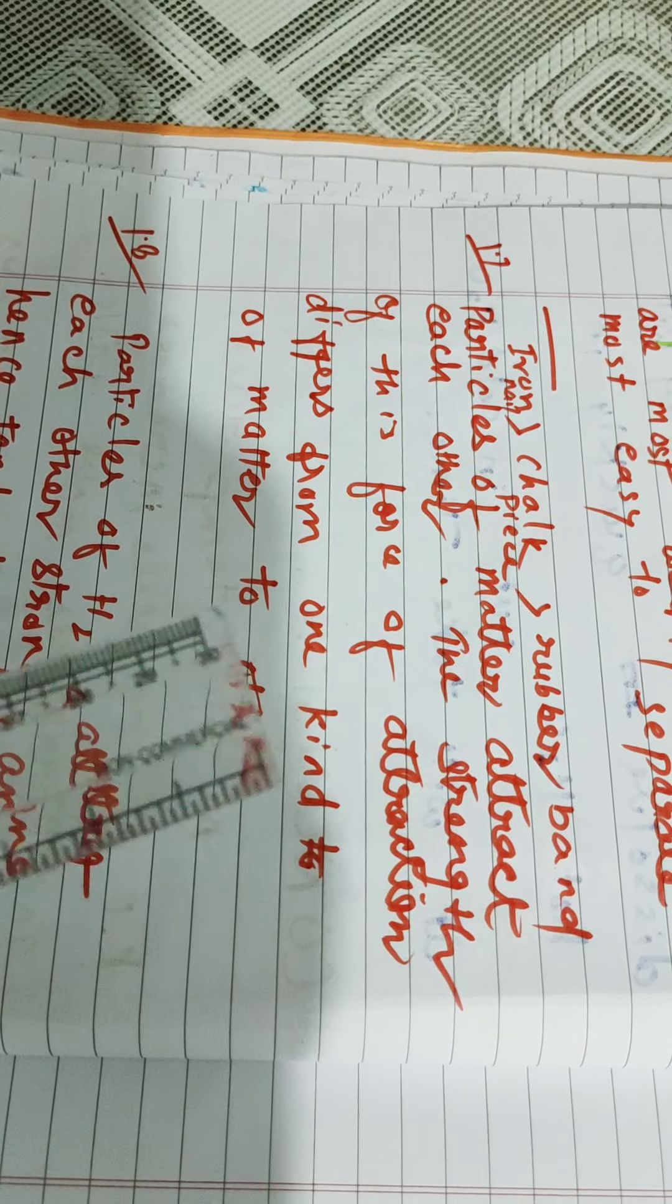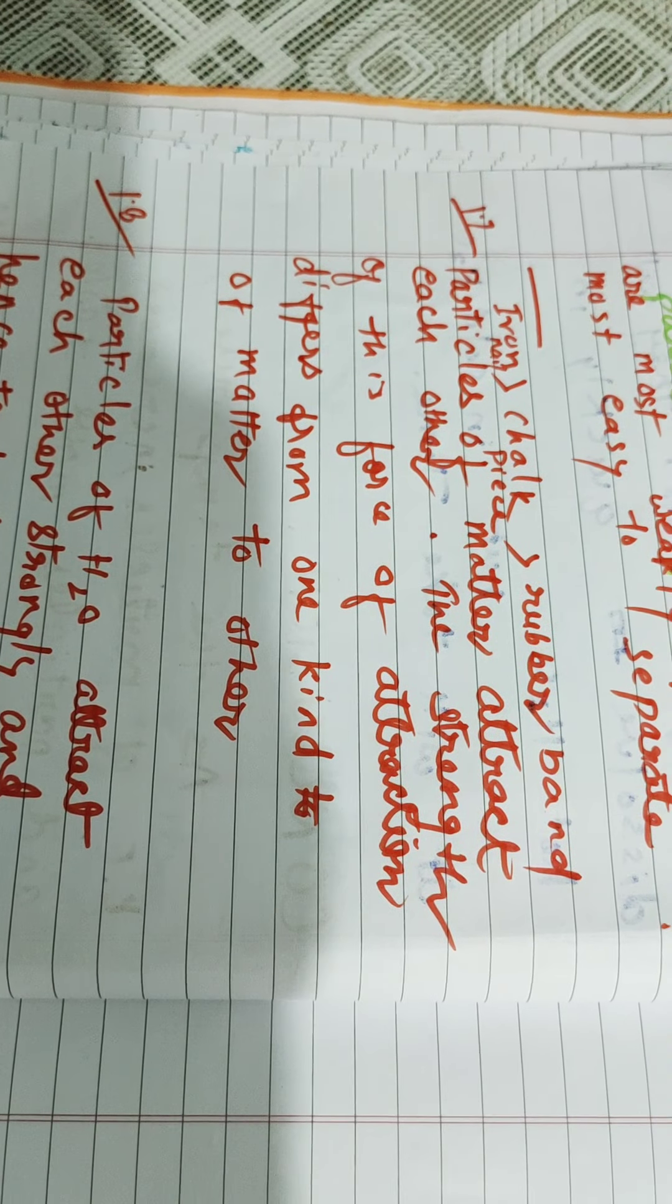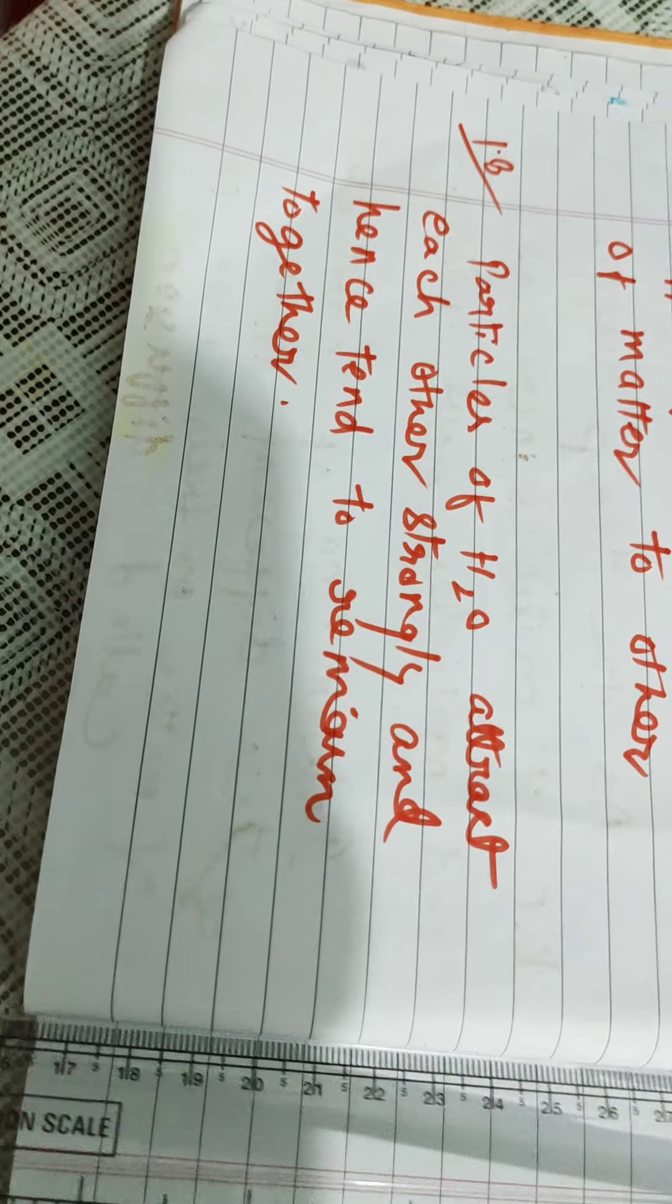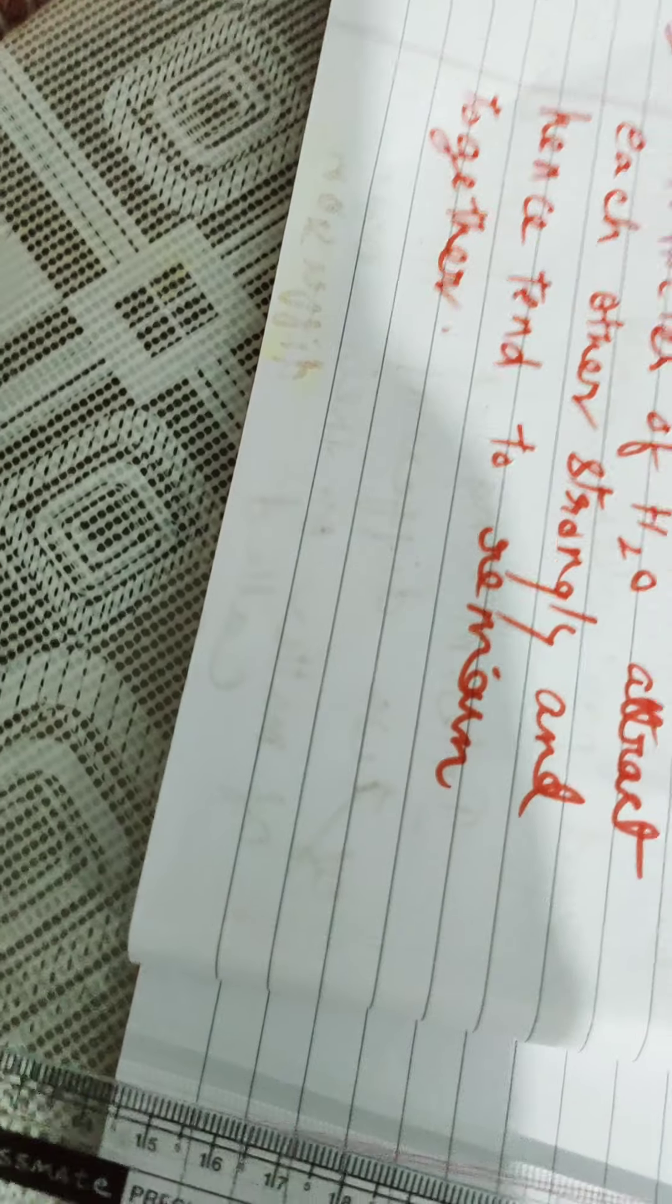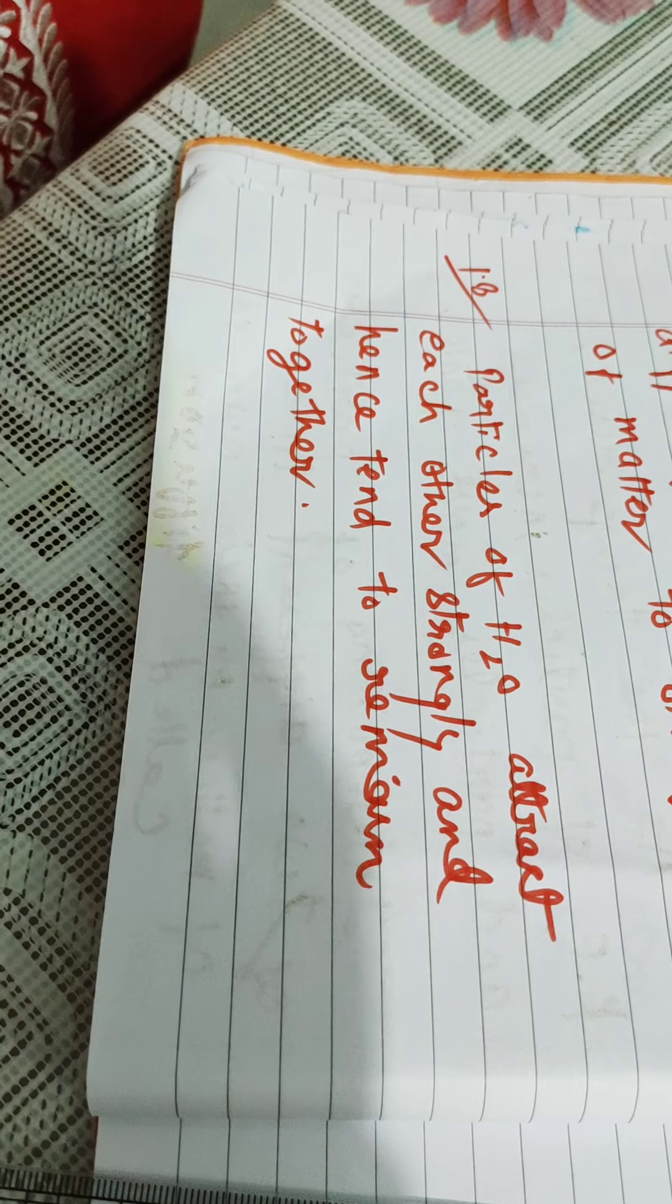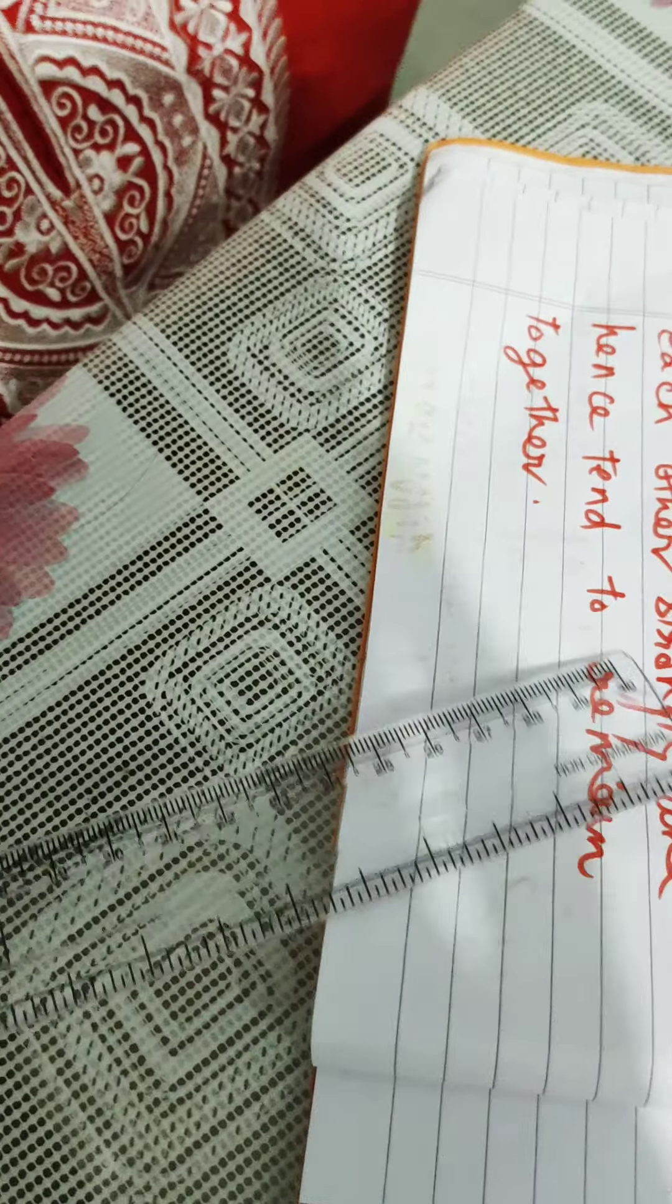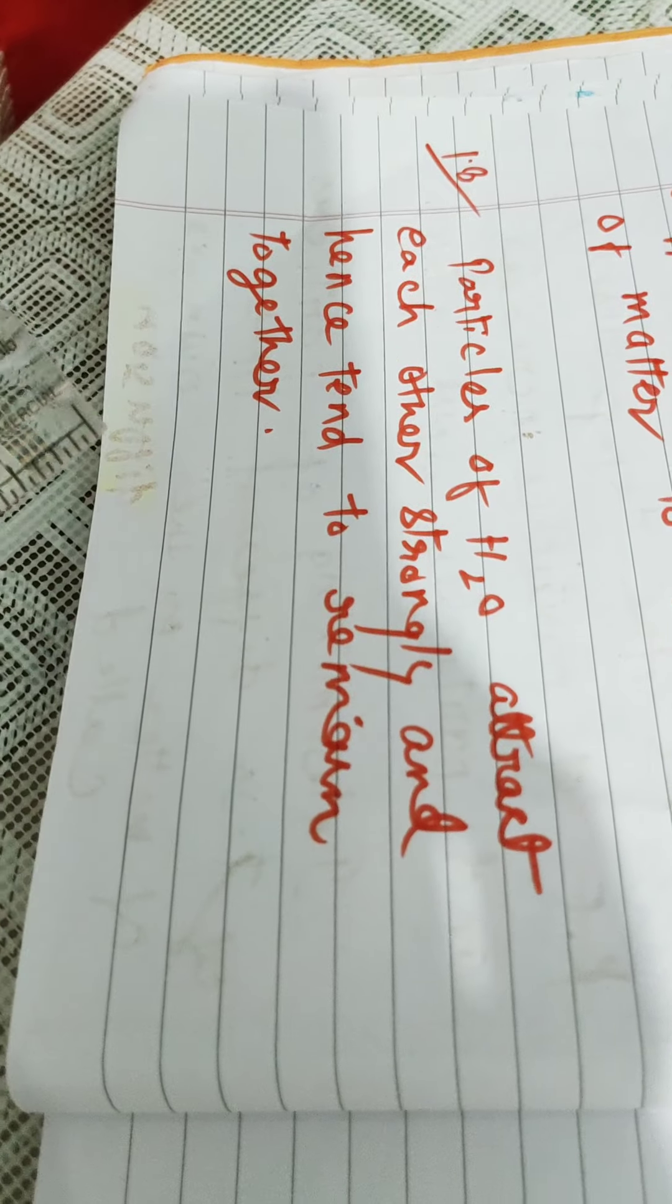In activity 1.8, you are asked to cut the stream of water falling from tap. You have to place your finger below the current of water. Here, you will observe that you won't be able to separate the water particles. Because particles of water attract each other strongly and hence tend to remain together.